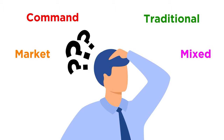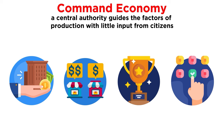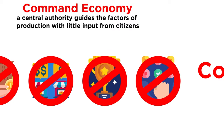In a previous tutorial, we learned about the types of economic systems, and we mentioned the concept of a command economy, or centrally planned economy. To review, command economies exist when a central authority, usually the government, guides the factors of production, and there is typically little input from the people. Command economies operate in direct contrast with market economies by going against private property, free market pricing, competition, and consumer choice.